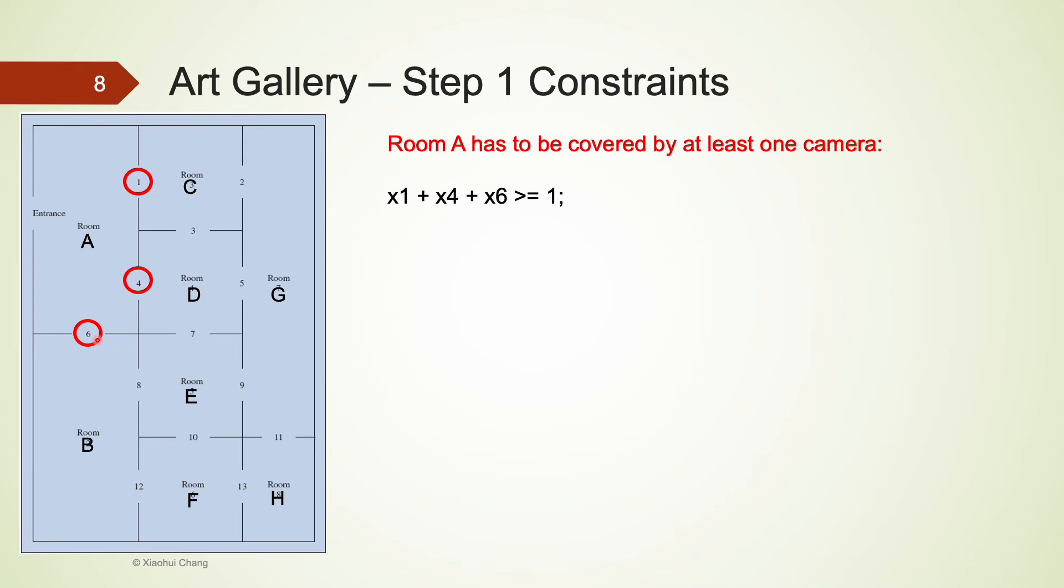You may remember this is one of the conditional constraints we discussed in one of the earlier videos. This constraint is also known as k out of n constraints. For our example, it would be 1 out of 3. To express this constraint using a mathematical model, we would require the sum of x1, x4 and x6 to be at least 1.